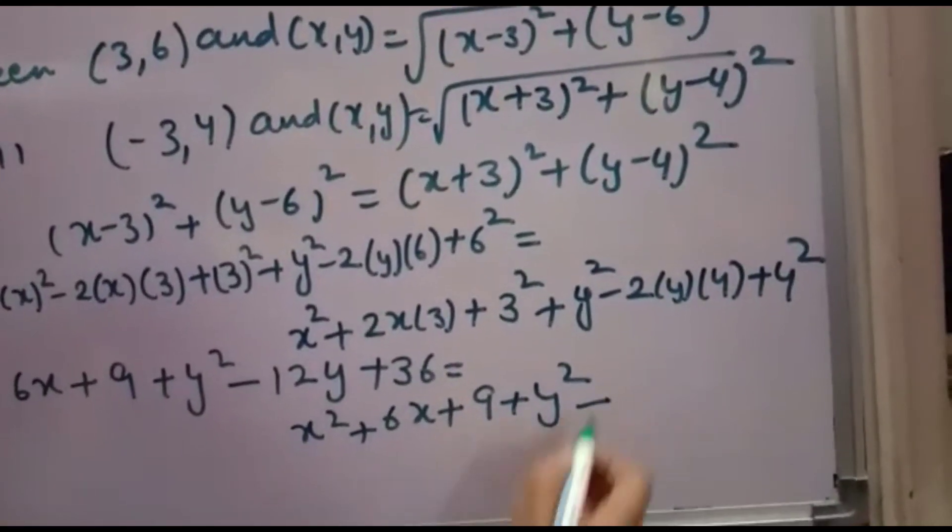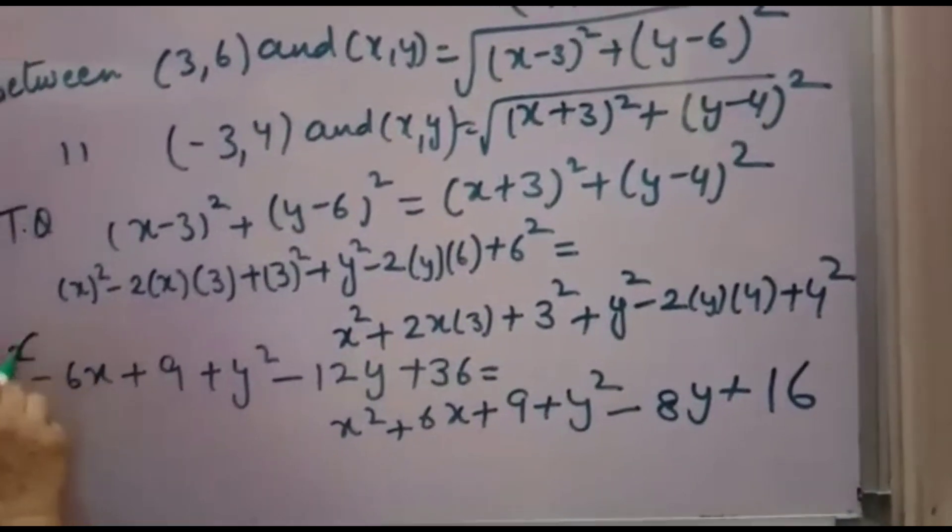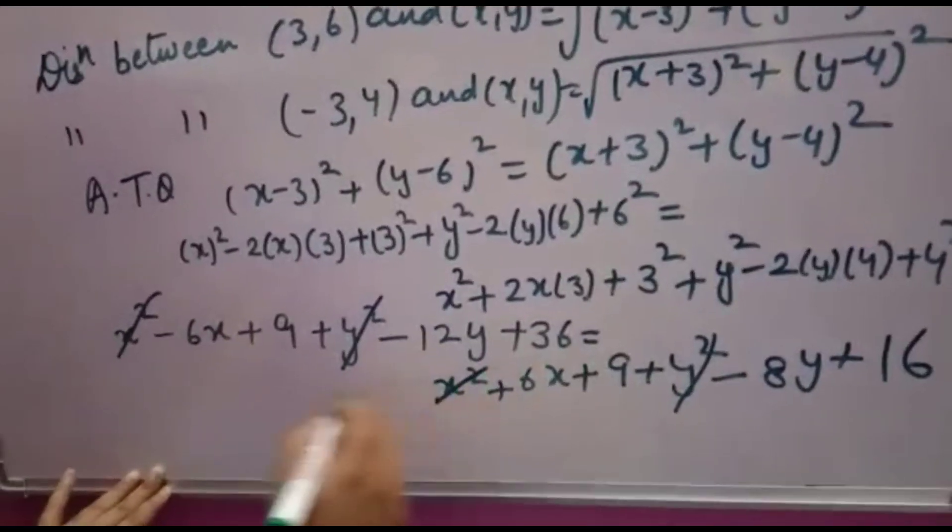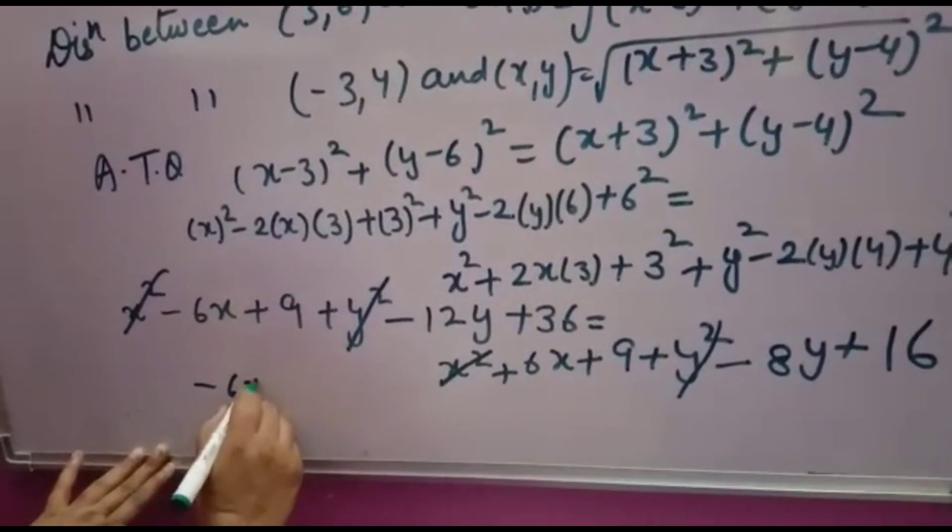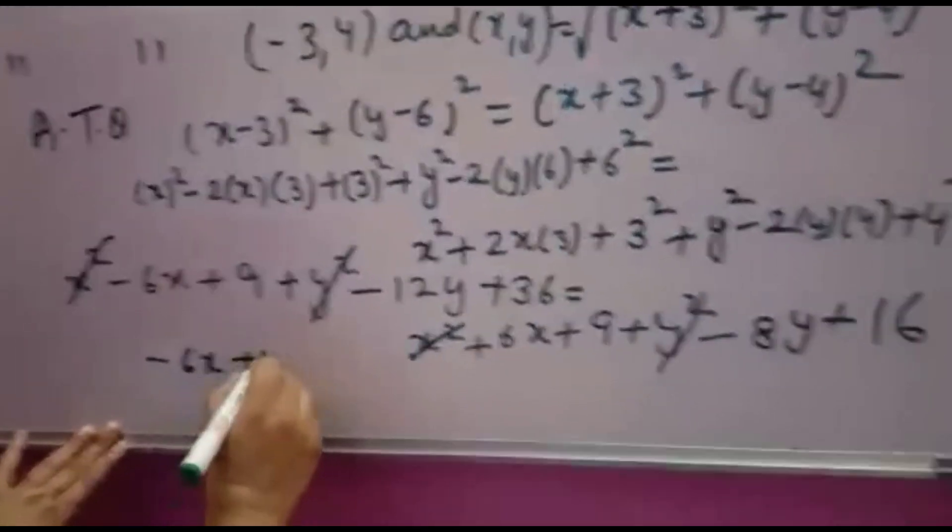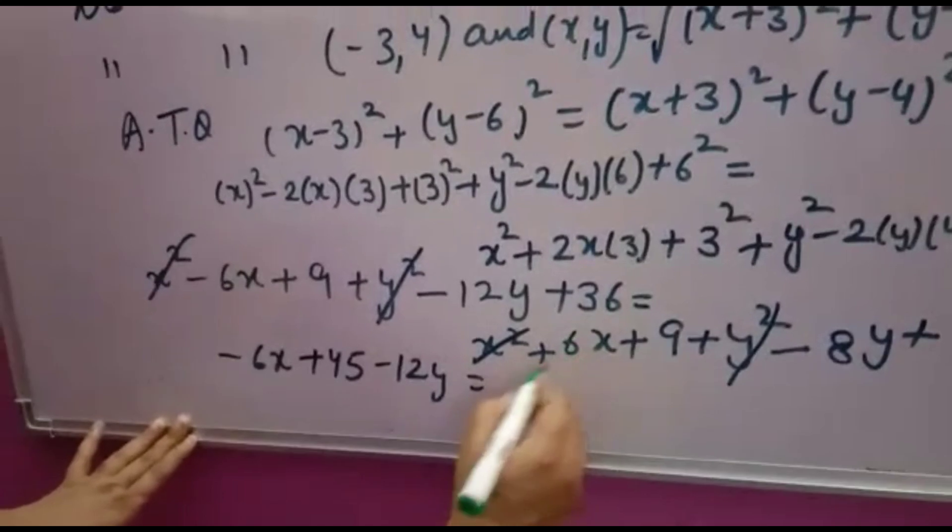...equals X² plus 2X times 3 is 6X plus 9, plus Y² minus 2Y times 4 means 8Y, plus 4² is 16. Now X² will be cancelled by X², Y² will be cancelled by Y².